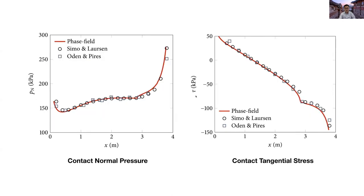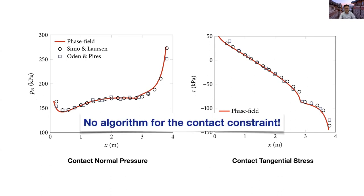And then we compare the contact normal pressure and tangential stress calculated by phase field and classical method. You can see that our phase field results show very good agreement with the classical results. But please note that the phase field method does not need any algorithm for the contact constraint. So this is a huge advantage in terms of implementation.